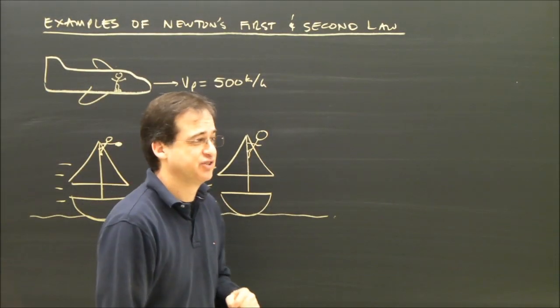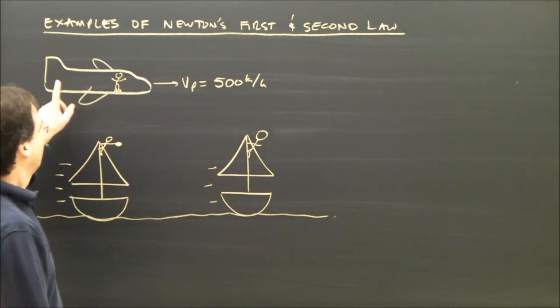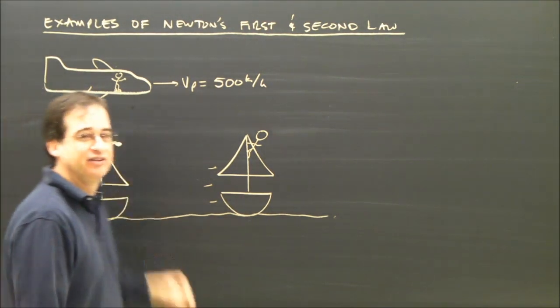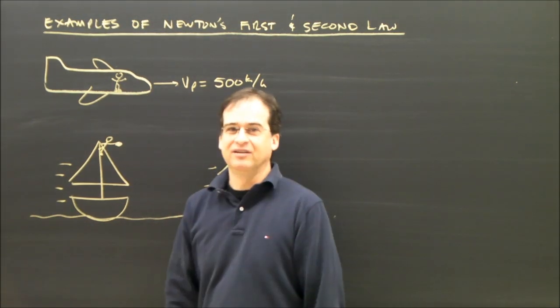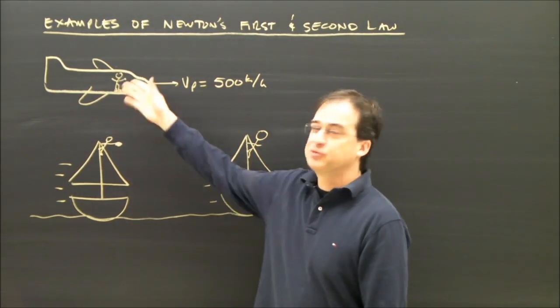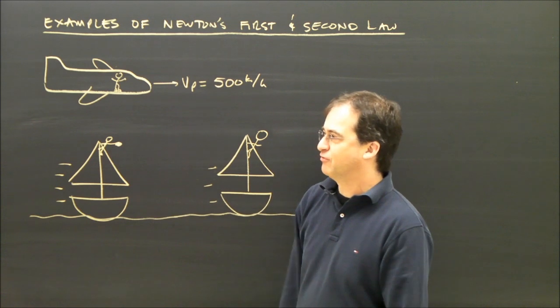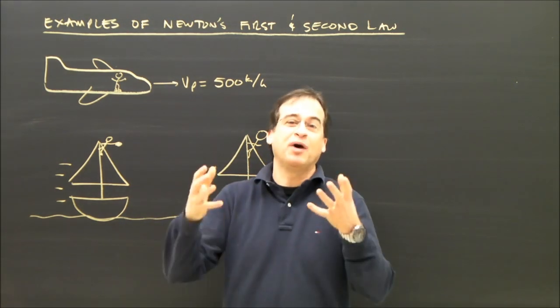Let's look at some examples of Newton's first and second law. Okay, here I am in an airplane traveling 500 kilometers per hour. I'm standing in the airplane, and the airplane's moving at 500 kilometers per hour, and I'm on the airplane, so I must be moving at 500 kilometers per hour, and I jump up and down.